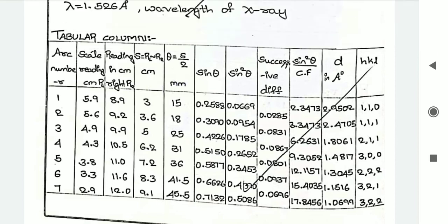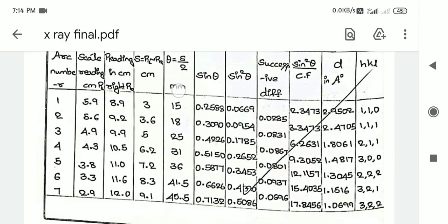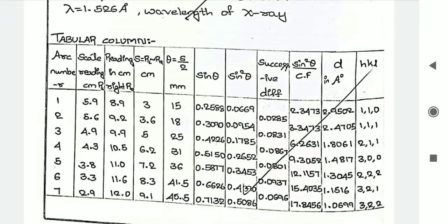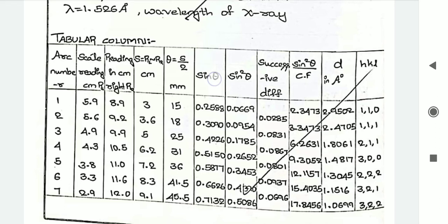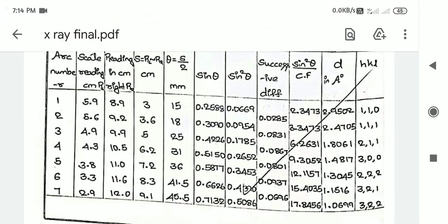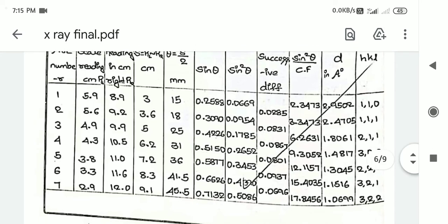Theta is important here — calculate it as S divided by 2, but theta must be in terms of millimeters. To convert centimeters to millimeters: for example, 3 cm × 10 = 30 mm, divided by 2 gives 15; 3.6 gives 18; 5 × 10 divided by 2, and so on up to all seven readings. Using a calculator, calculate sine theta: for example, sine of 15 degrees, sine of 18 degrees, and fill in all seven values. Next, square these values for the sine squared theta column — for example, 0.25 squared is 0.0625, and 0.3090 squared is 0.0955. Calculate sine squared theta for all seven readings.